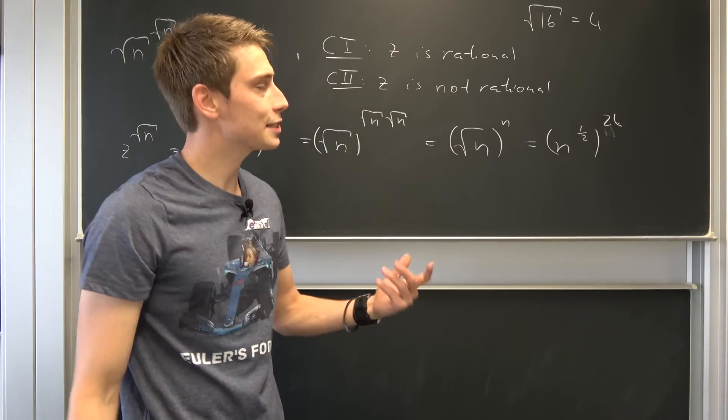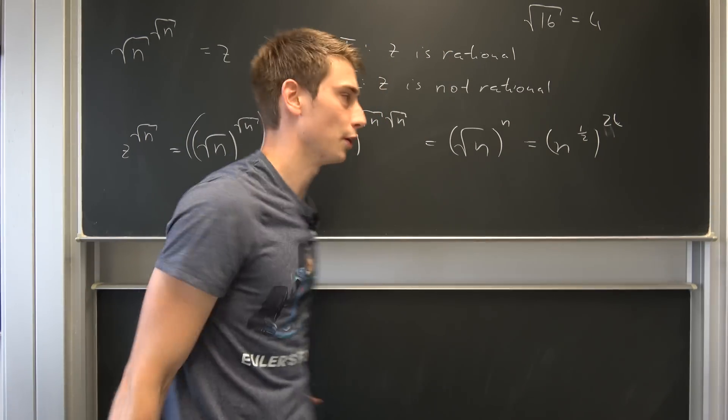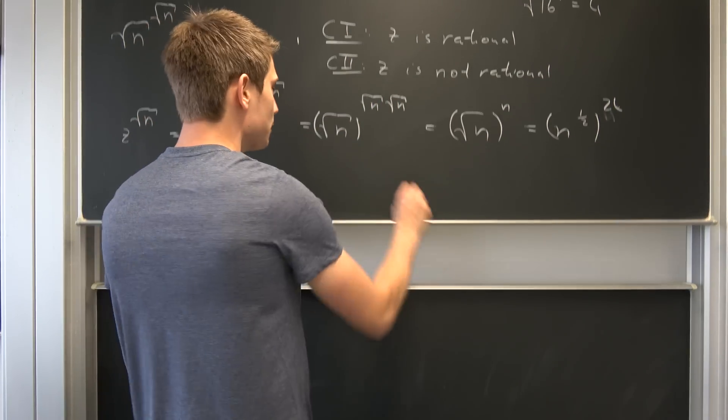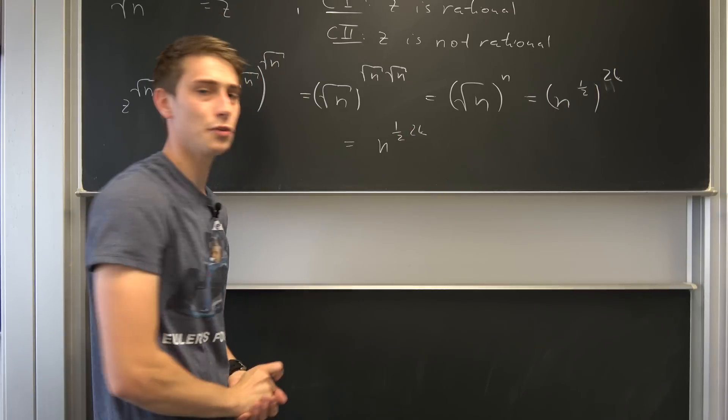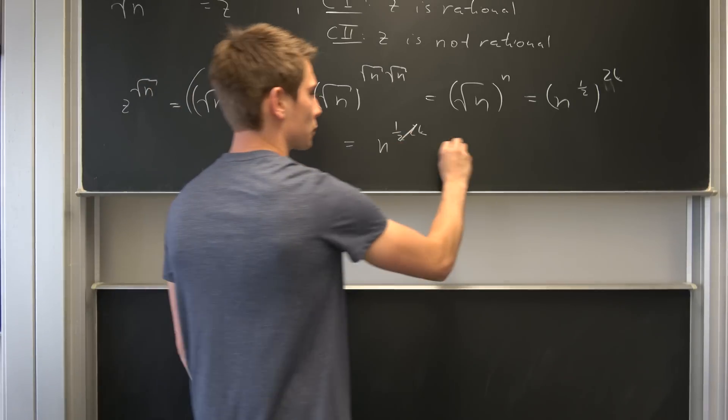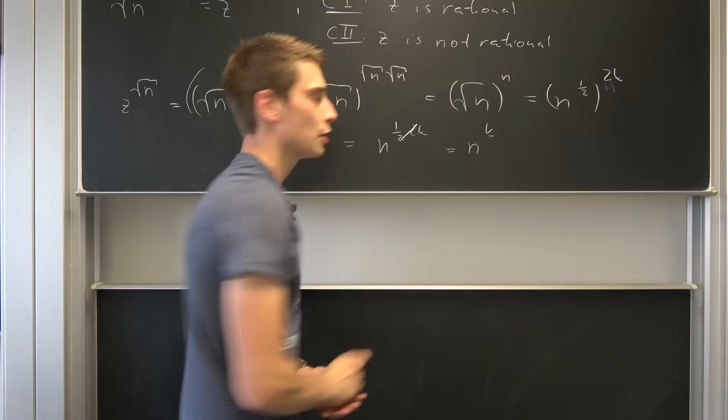And now we can once again use the property of the powers right here to turn this into n to the one-half times 2k power. This and that is going to cancel out. We are going to end up with n to the kth power.